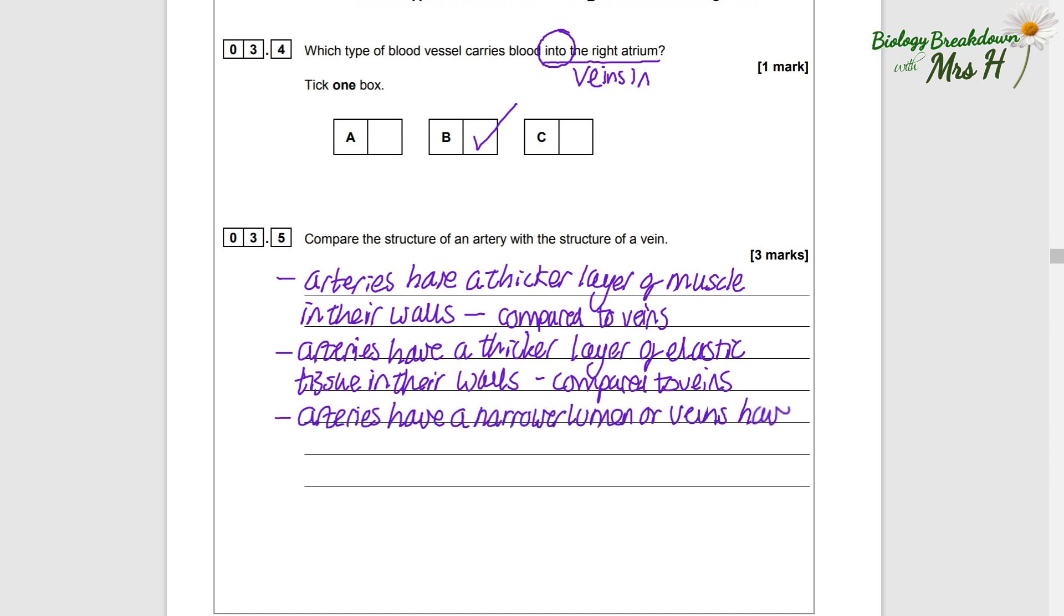We should note that we won't get any extra marks for writing that veins have thinner layers if we've already written about the fact arteries have thicker layers, because it's the same marking point. You also need to write that arteries have a narrower lumen compared to veins, or that veins have a wider lumen. The lumen is the space that the blood moves through. Arteries do not have valves, and veins have valves.